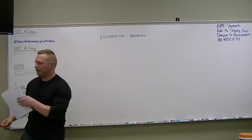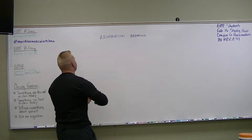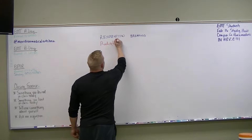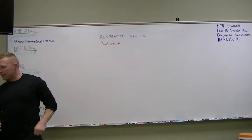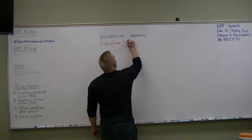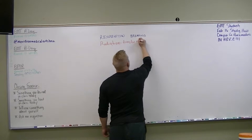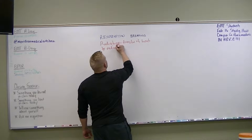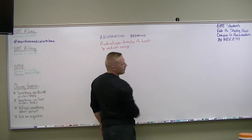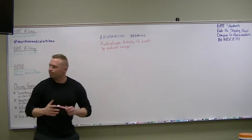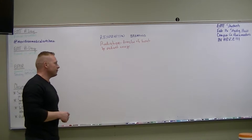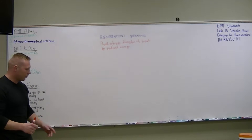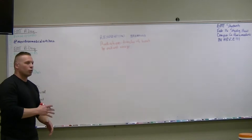I have radiation. Radiation is the transfer of heat by radiant energy. Radiant energy is an invisible light that transfers heat. My example for that is if I turn on a space heater, it heats up the immediate area, which is the radiant heat. It comes in contact with your skin and it warms your skin or your body.